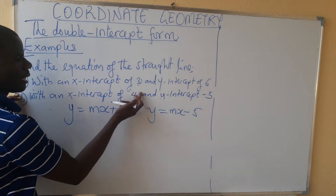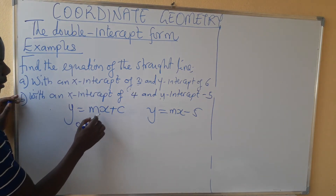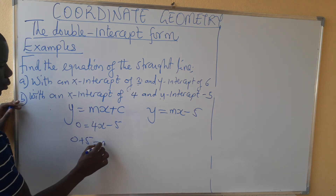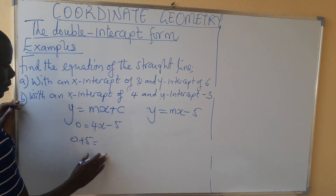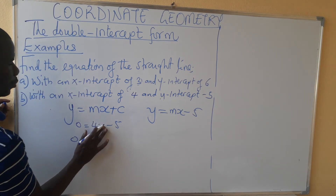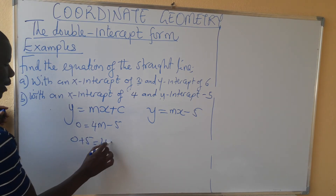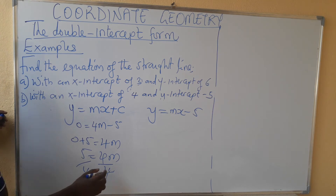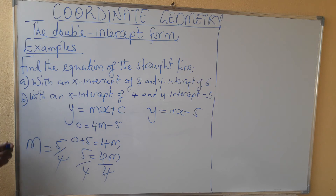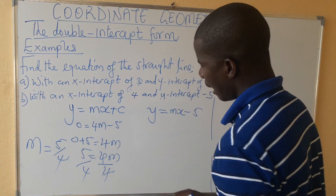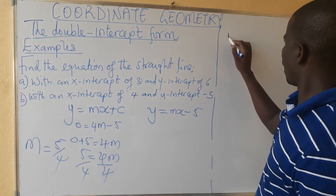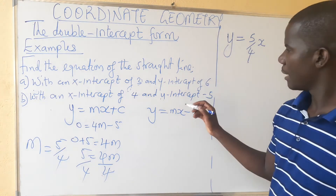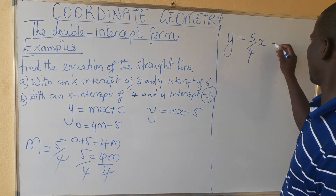If this is our x-intercept, then the y-coordinate is 0. So substituting x = 4 and y = 0: 0 equals 4m minus 5, so 0 plus 5 equals 4m, giving 5 equals 4m. Dividing by 4, m equals 5 over 4. So our equation is y equals 5 over 4 times x minus 5.